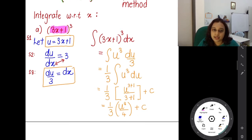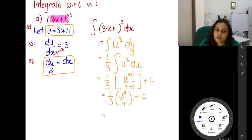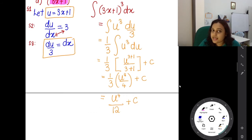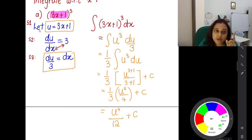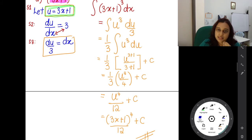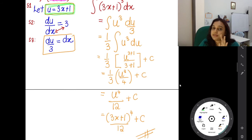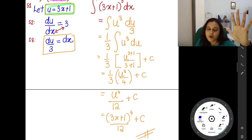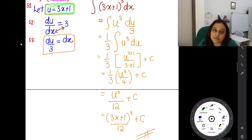Now the numbers can be multiplied: 1 times u⁴ is u⁴, and 3 times 4 is 12. So it's u⁴/12 plus C. But your final answer cannot be written in terms of u — you must substitute u back. What was u? From step 1, u = 3x + 1. So the final answer is (3x + 1)⁴ / 12 + C.